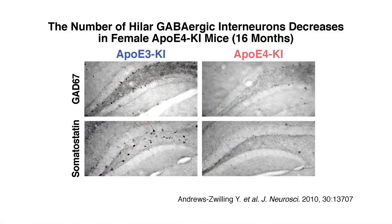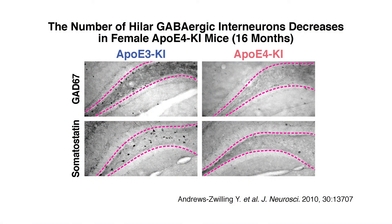For the past decade, we have been using a knock-in mouse model for our research, in which the endogenous mouse ApoE gene is replaced by human ApoE4 or ApoE3 gene. We have found that female knock-in mice have age-dependent loss of GABAergic interneurons, a population of inhibitory cells in the dentate gyrus of the hippocampus.